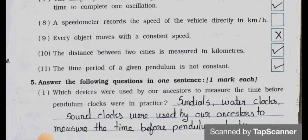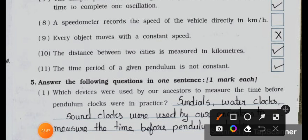Now see the tenth one: the distance between two cities is measured in kilometers. It's true. Now see the eleventh one: the time period of a given pendulum is not constant. It's right.